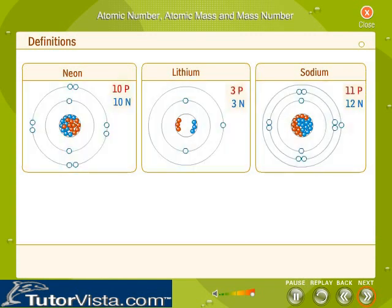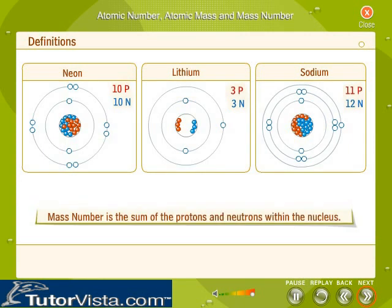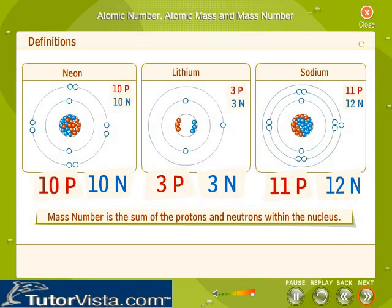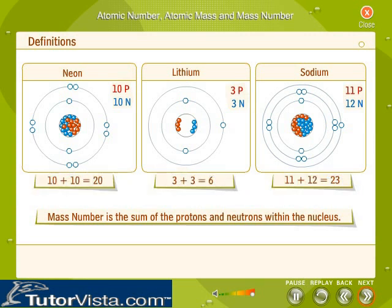The mass number is the concentrated mass of an atom located within the nucleus. Mass number is the sum of the protons and neutrons within the nucleus of an atom, i.e., the sum total of all the nucleons in the nucleus of an atom.